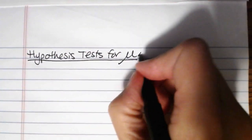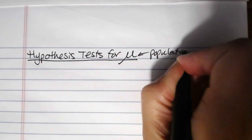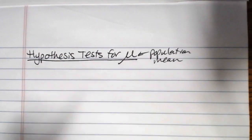In this video we're going to be talking about hypothesis tests for mu, which is the population mean. Just like creating a confidence interval for the population mean, you will find there are two different hypothesis tests that we can run for mu.